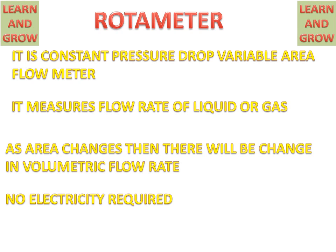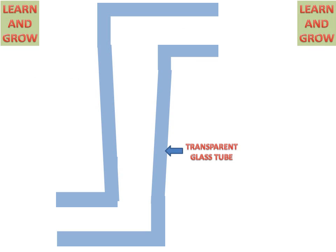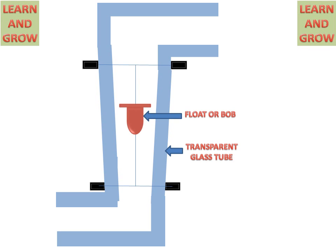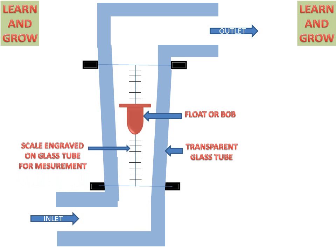We will see the working and parts of the rotameter. It has a transparent glass tube and a float or bob. The inlet is from the down side of the rotameter and the outlet is from the upper side. A scale is engraved on the glass tube for measuring the flow rate.